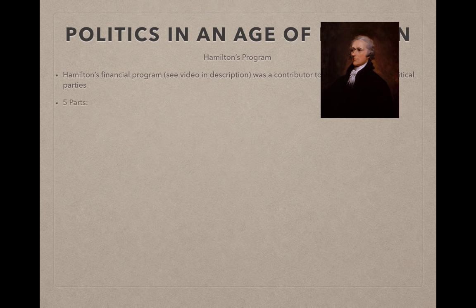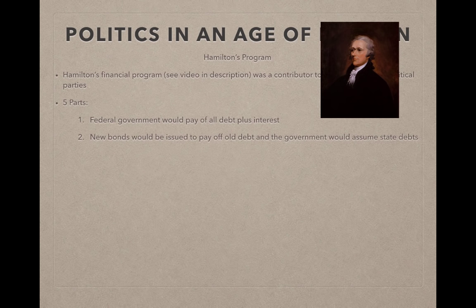Why was Hamilton's plan so divisive that it helped create political parties? There were five parts. Number one: the federal government would pay off all of the debt plus interest. New bonds would be issued to pay off all debt, and the federal government would assume state debts.